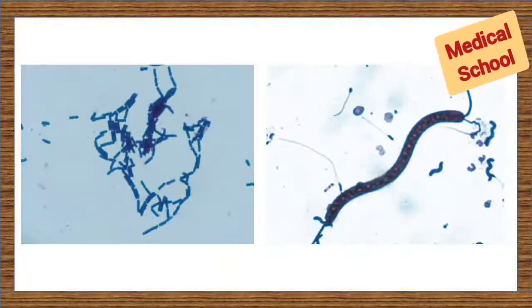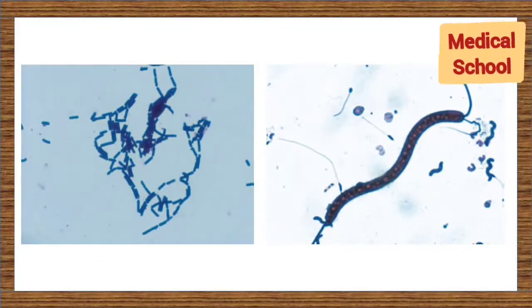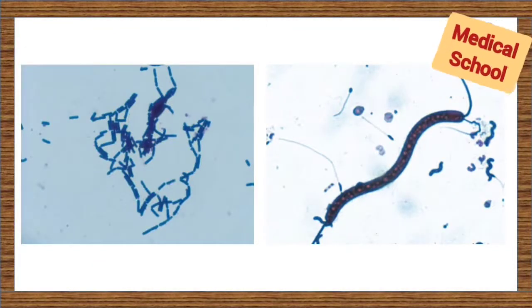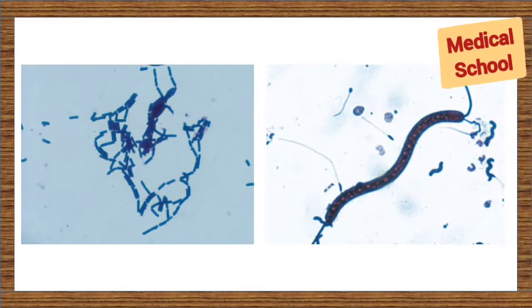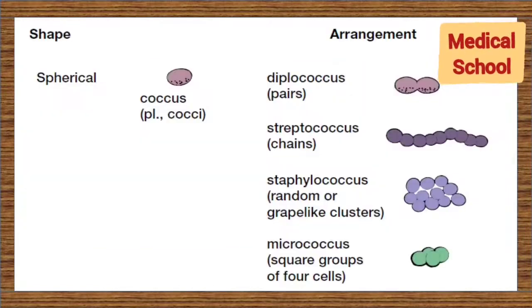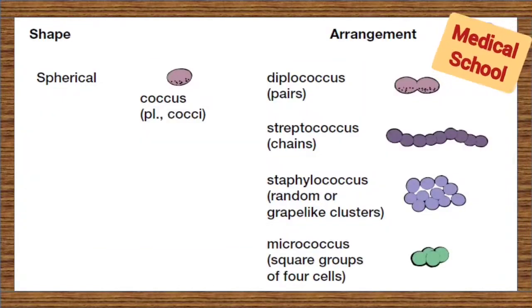Once bacteria have been properly stained, it is usually an easy matter to see their overall shape. For future reference, these are the shapes of bacteria.